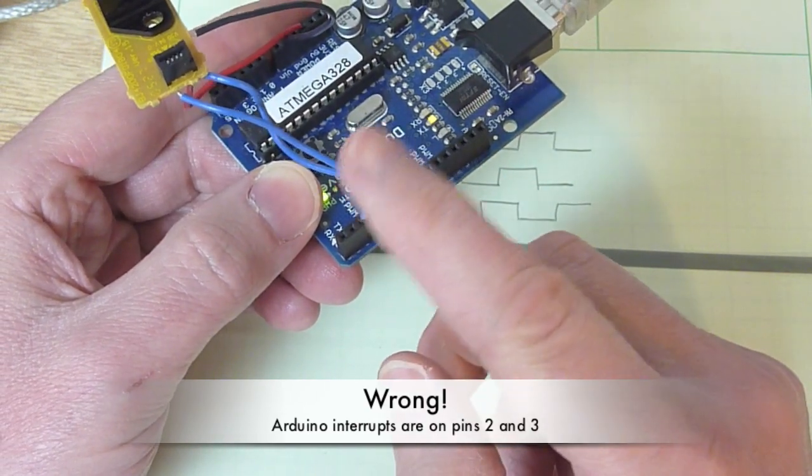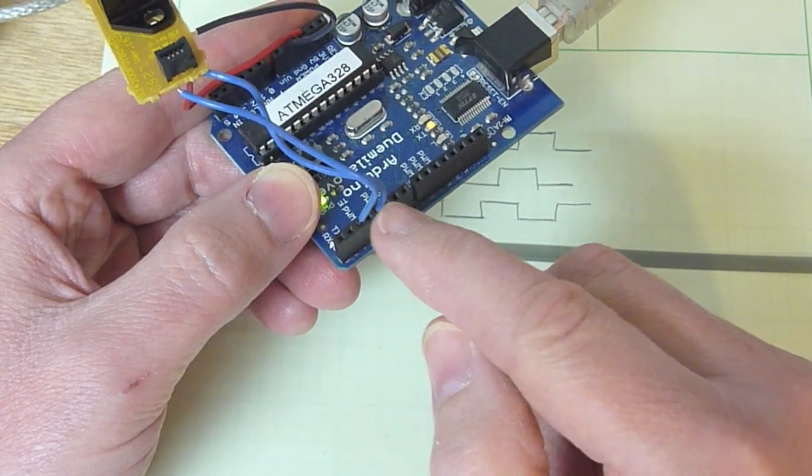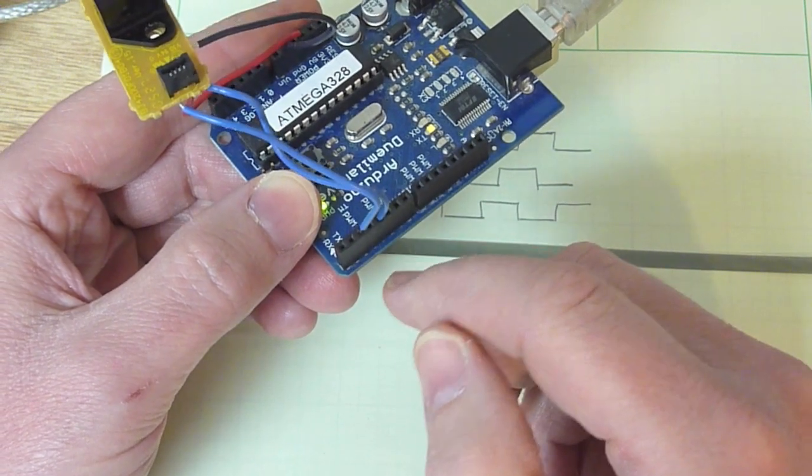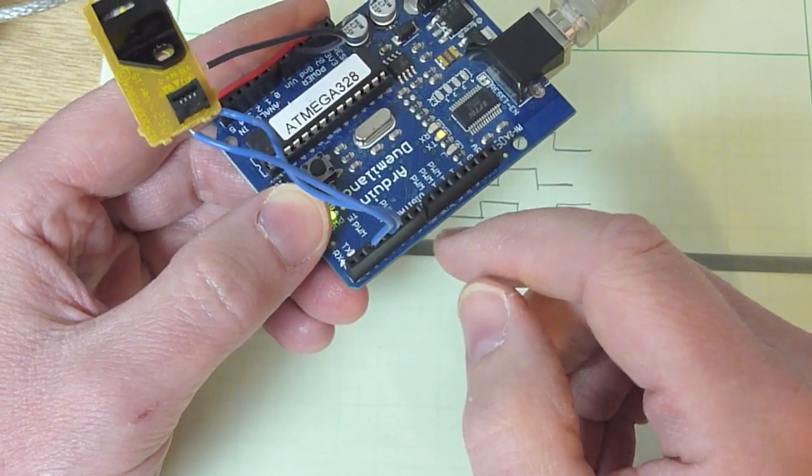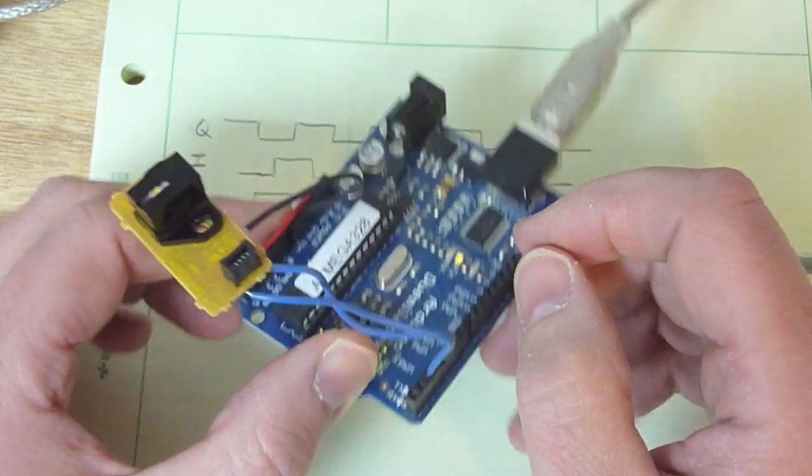So every time I changes, we trigger an interrupt and then we compare these two wires. And if they're the same, we increment and if they're different, we decrement. And that gives us an interrupt driven way to keep track of the encoder. So let me show you the code and then a quick demo.